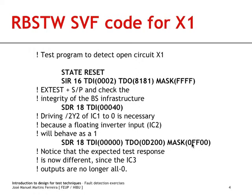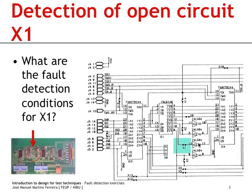The response for this case is restricted to the boundary scan cell associated to 2Y3, so it should be sufficient to look into this boundary scan cell, meaning that our mask could have a single bit at one.